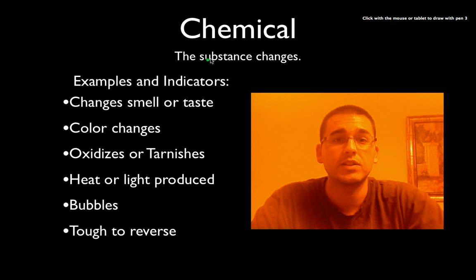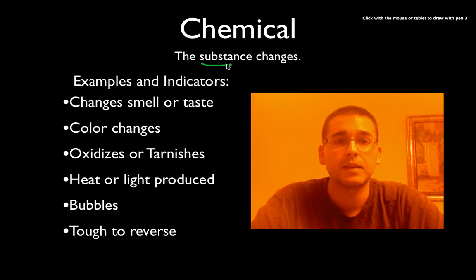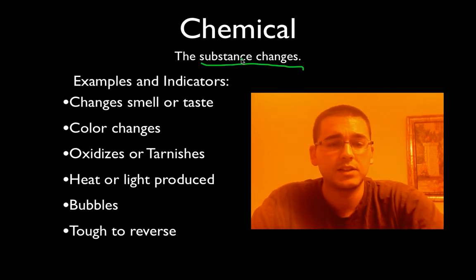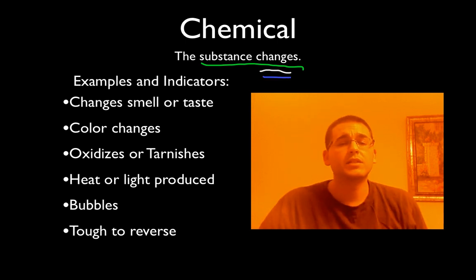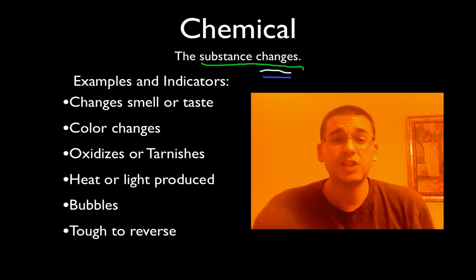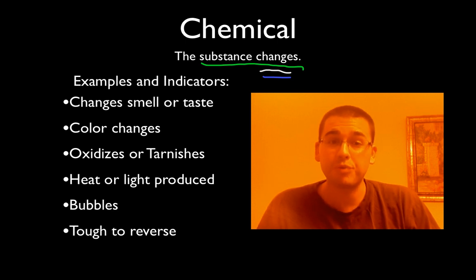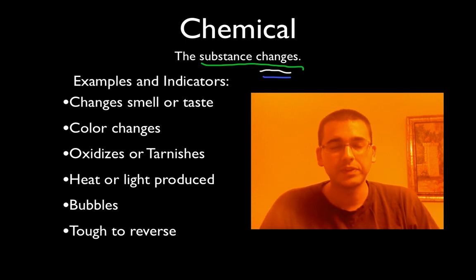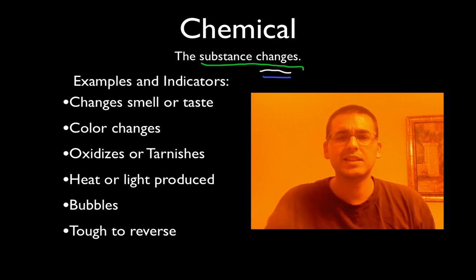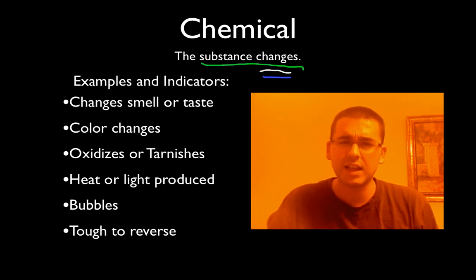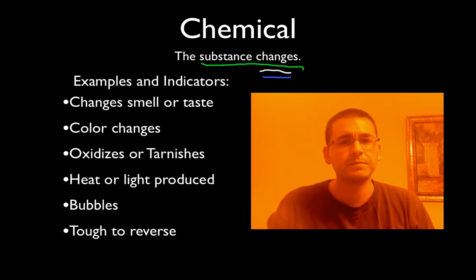All of those things remain the same substance. With chemical changes, though, the substance is changing — I'll underline this in three colors. This is very important: the substance is changing and it's becoming something brand new. On the left I have a bunch of examples and indicators — things that tell you that a chemical change has occurred.